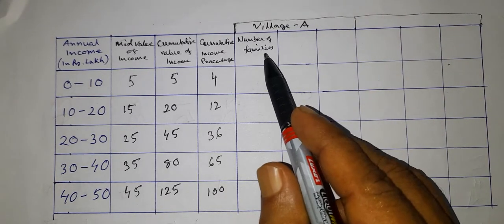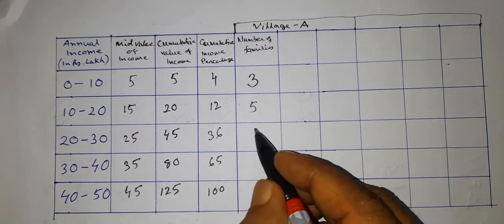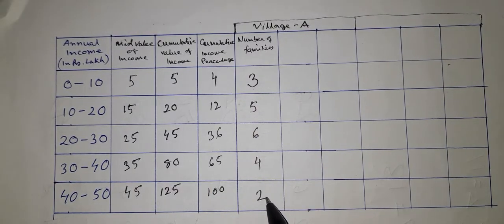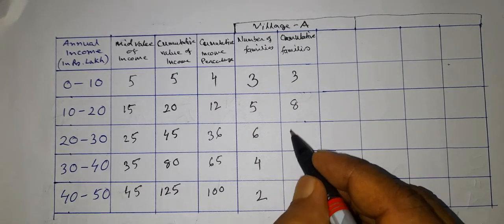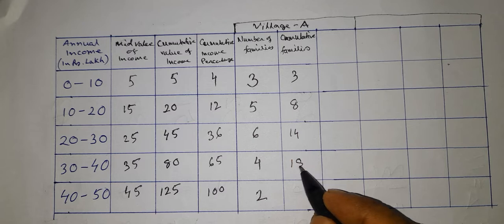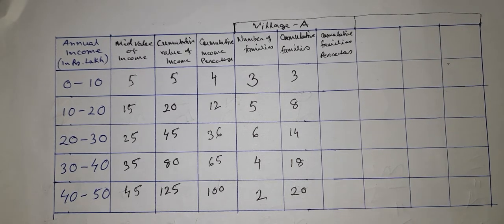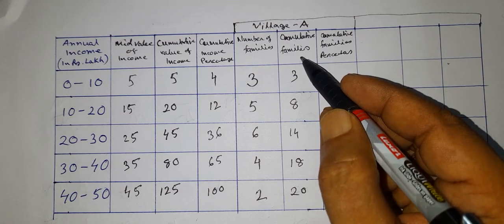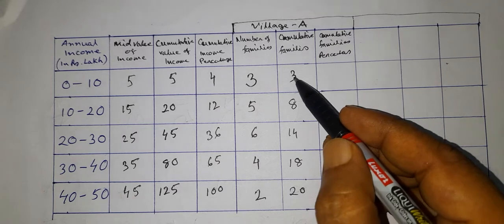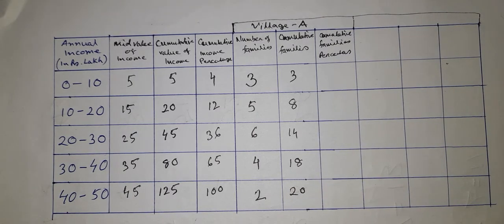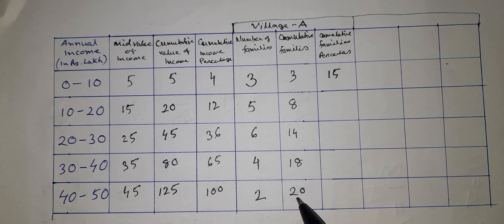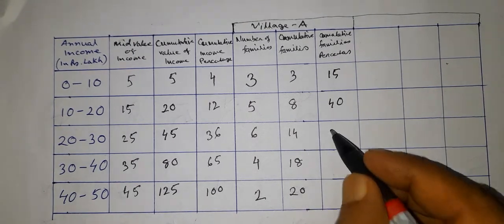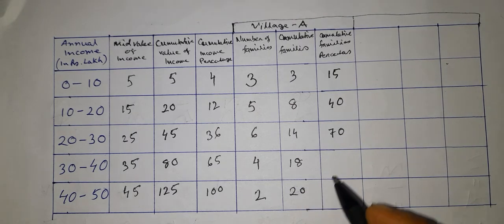In village A, the number of families are 3, 5, 6, 4, 2. The cumulative number of families are 3, 8, 14, 18, 20. Now the cumulative percentages of these family numbers are: 3 out of 20 is 15%, 8 out of 20 is 40%, 14 out of 20 is 70%, 18 out of 20 is 90%, and 20 out of 20 is 100%.